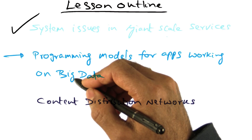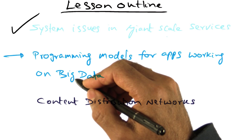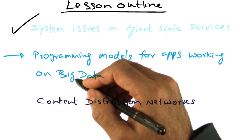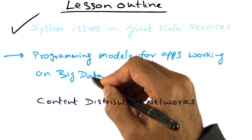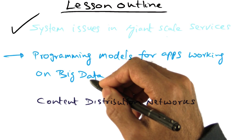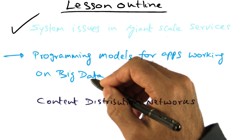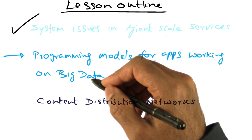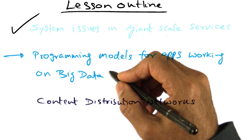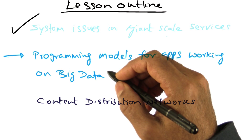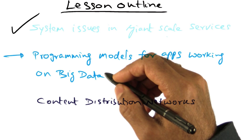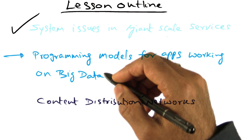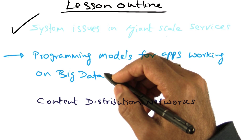The term big data has become a buzzword. Computations in giant-scale services are usually simple, but they work over large data sets — hence the name big data. And naturally, because they're working with a large data set, these computations take a long time to compute. For example, searching for John F. Kennedy's photographs in all the documents available on the web is an example of a big data computation.